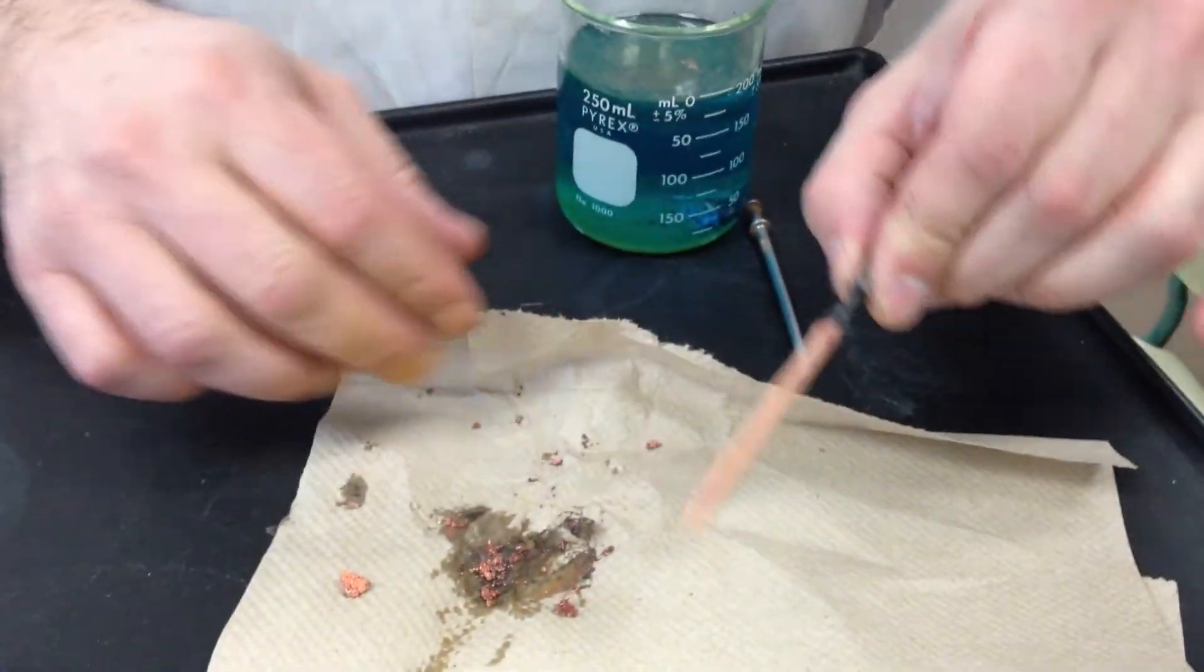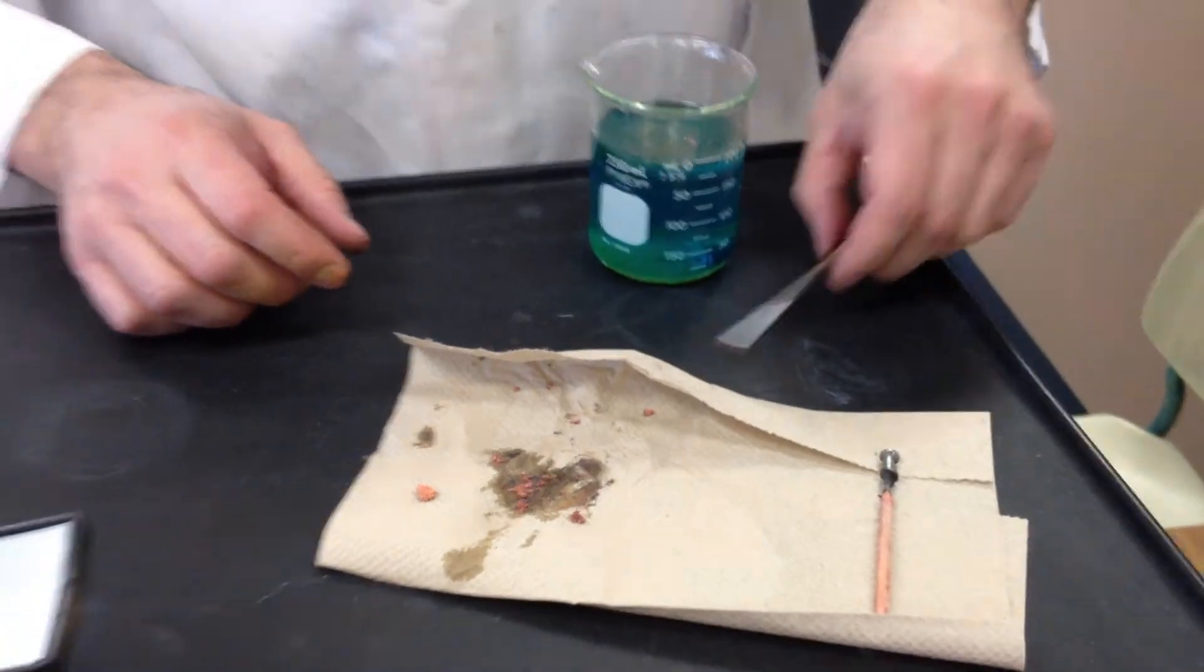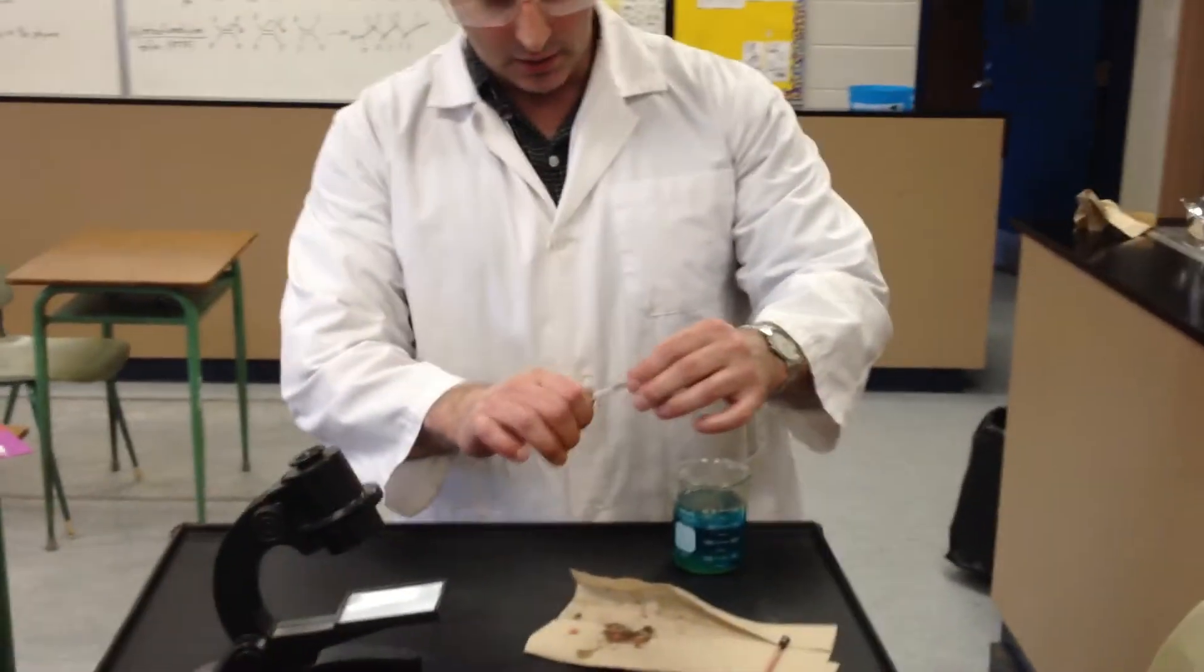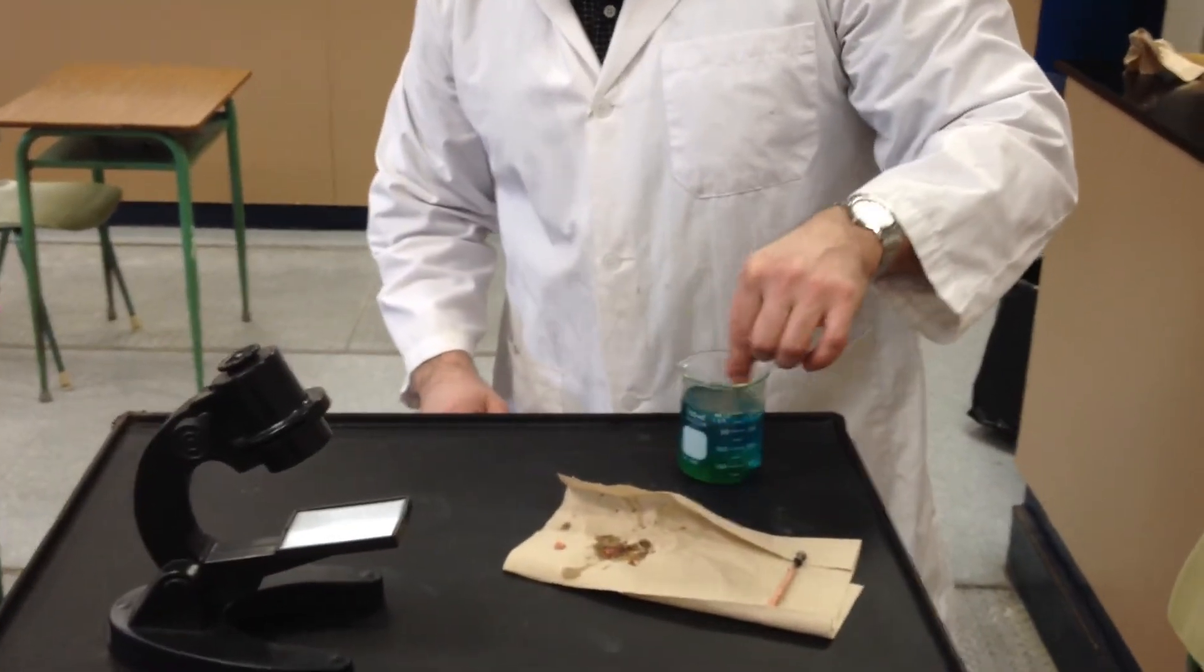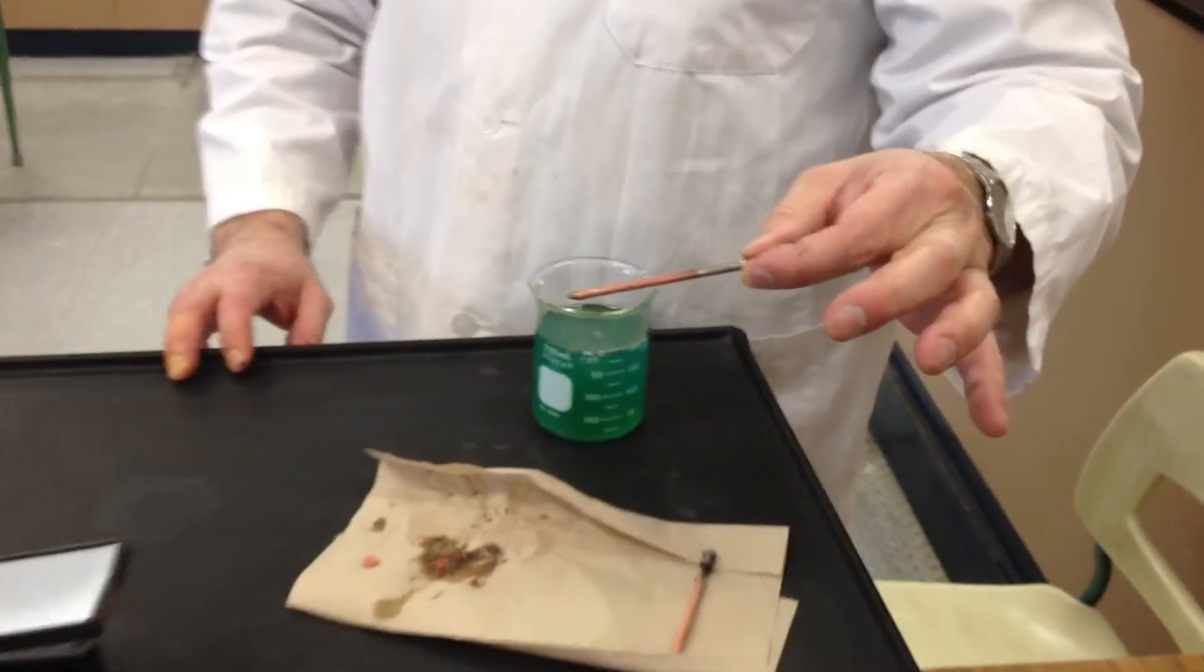So the copper was reduced onto the nail and the iron went into the solution. Now I've taken a freshly shiny nail to show you how quickly the reaction takes place. I'm going to stir the solution with the nail for only a few seconds, and you see already it causes the nail to become copper coated.